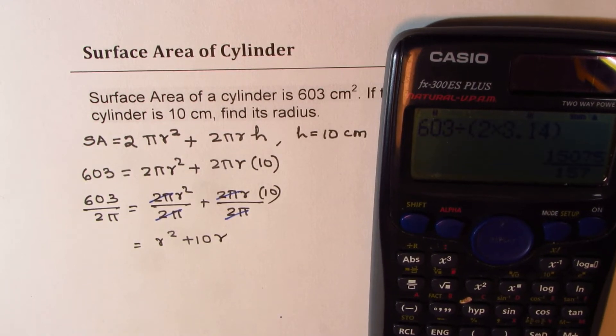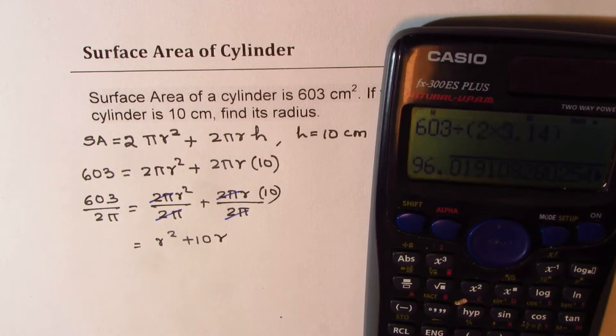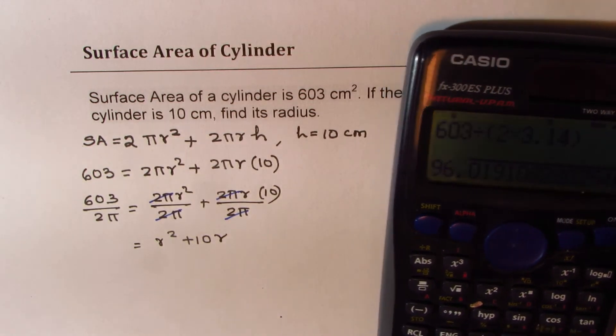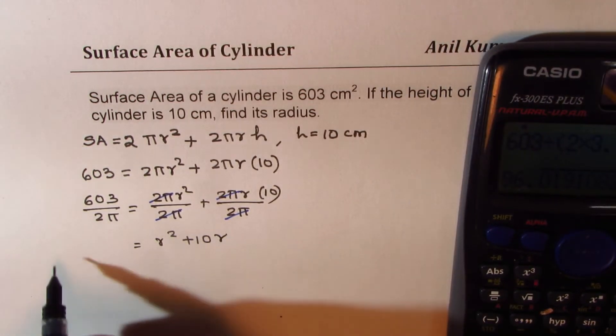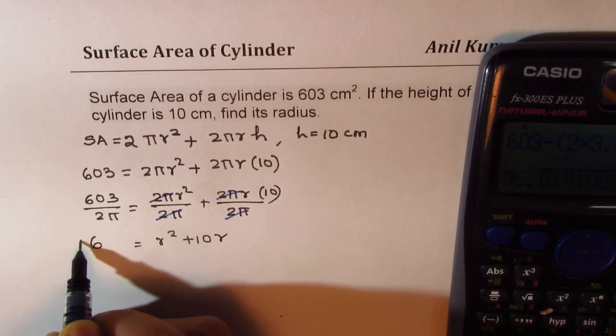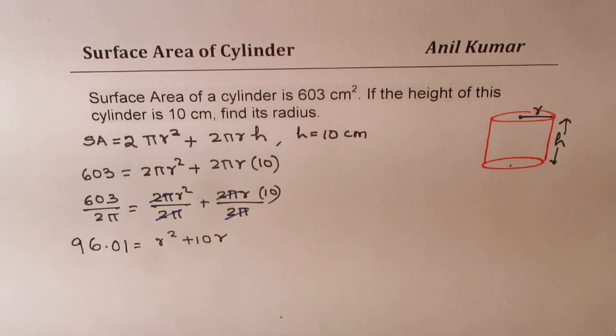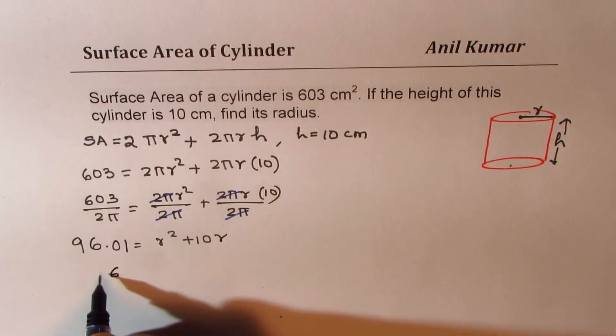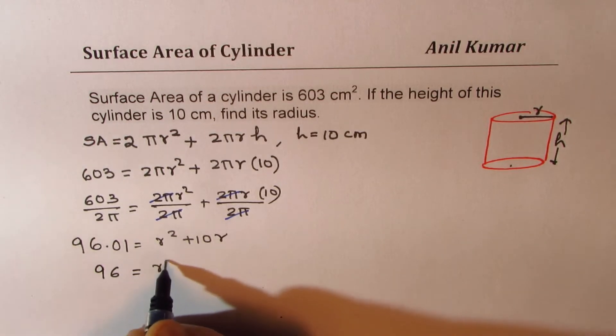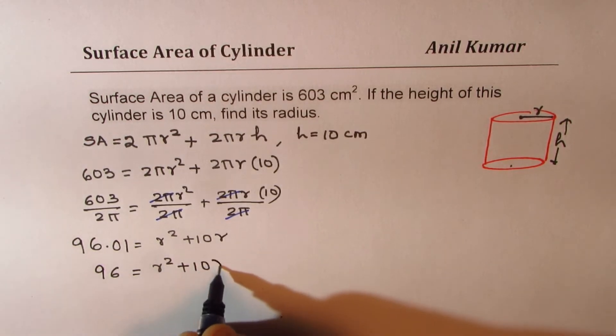So we get, in decimals, 96.01. So we get this as 96. So let me write this as 96.01. So let me just write this as 96. So what we get here is 96 equals to r² plus 10r.